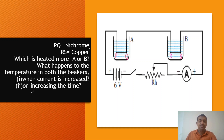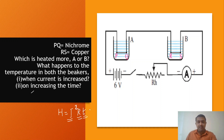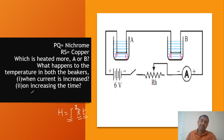What happens to the temperature in both beakers when current is increased? When current is increased, heat energy is increased. H = I²RT — so as current increases, heat increases. Also on increasing the time, heat energy is increased, and the temperature of the Nichrome wire increases. We need a thermometer to measure this increase.